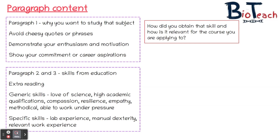For example, if you're saying you're good at working in a team, give an example of how group work in the lab helped you develop this. If you're claiming leadership skills, give an example of how you've led a project or team to achieve a task. If you say you're a good problem solver, give an example of where you solved a problem. Anyone can say they have certain skills — what admissions tutors want to see is how you obtained that skill and how it's relevant for the course you're applying for.